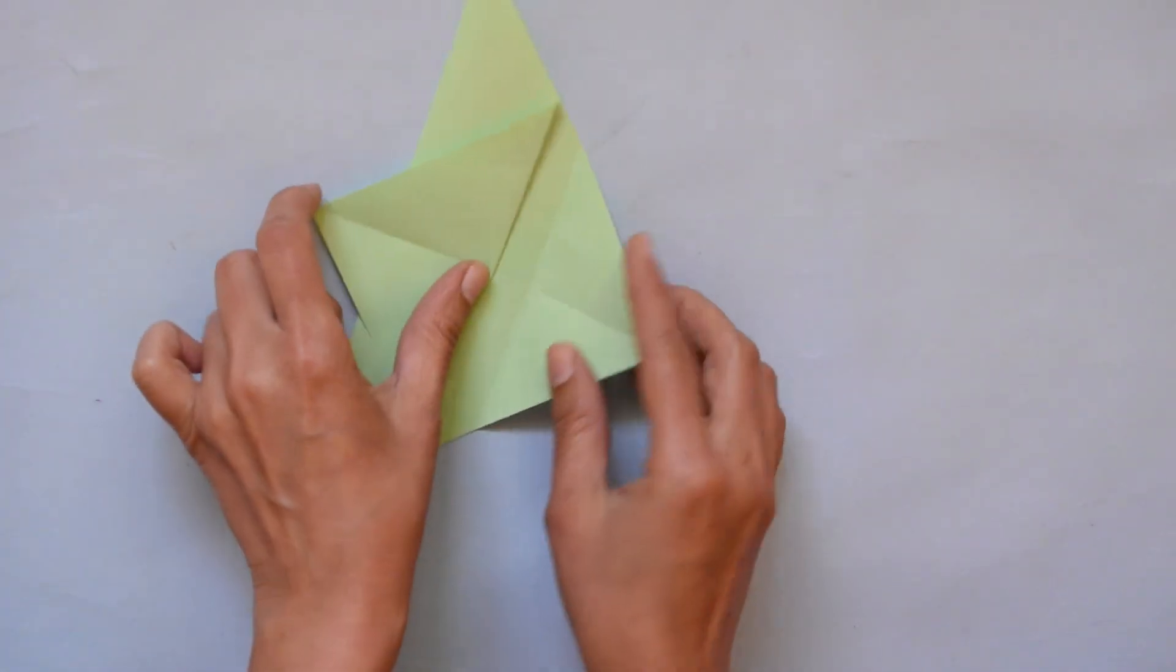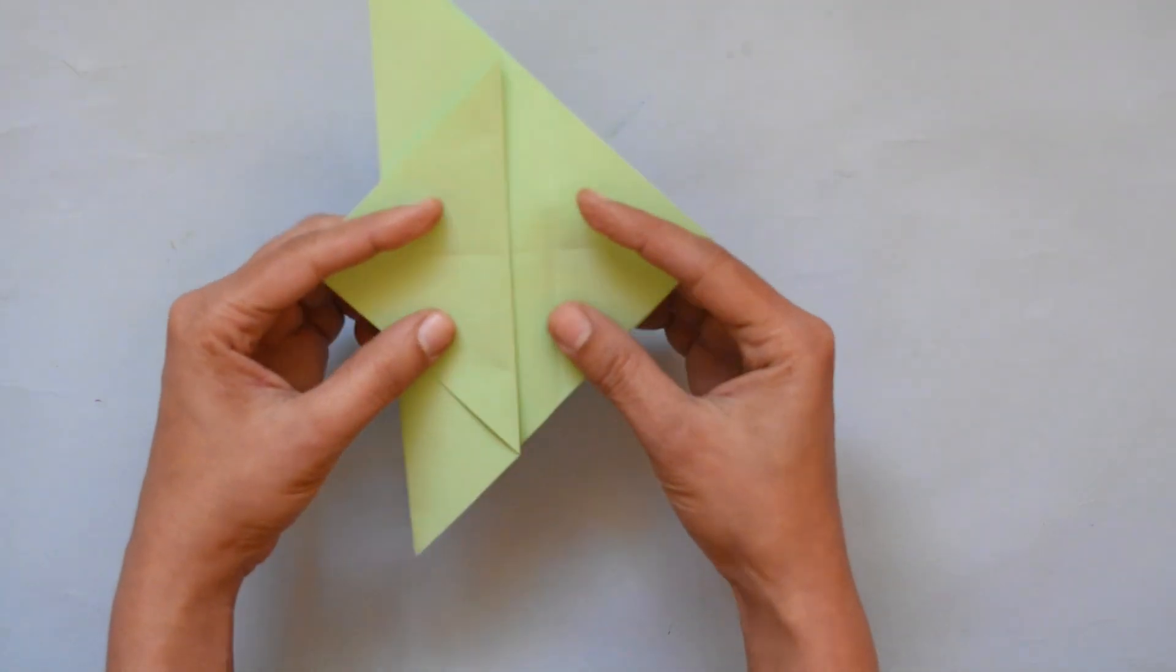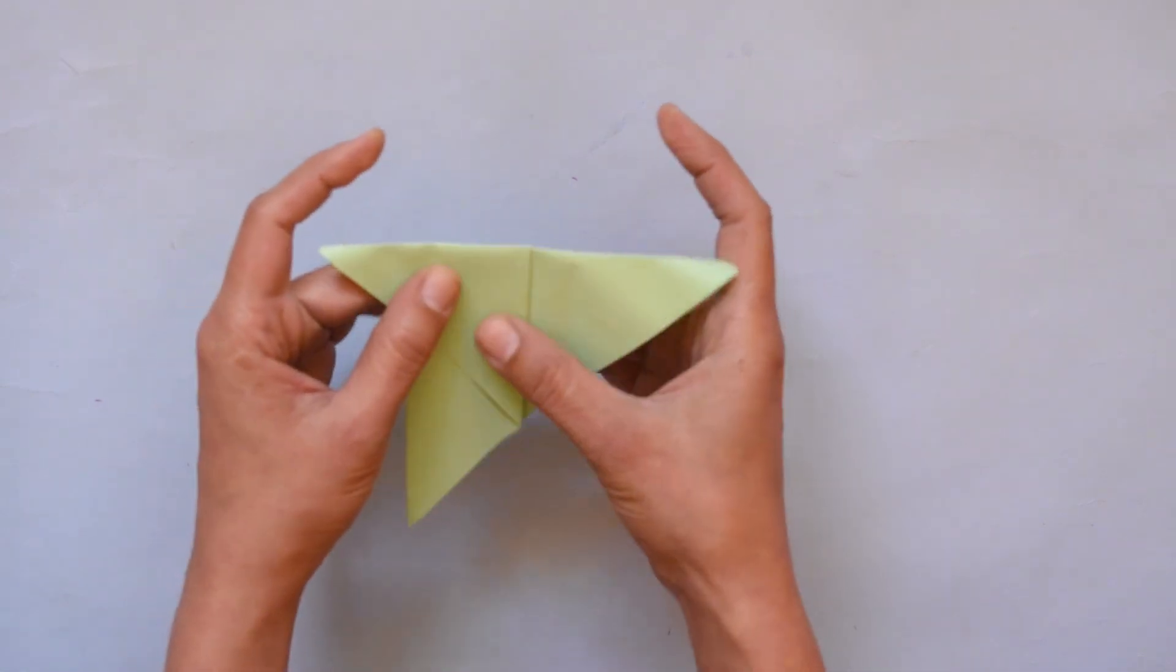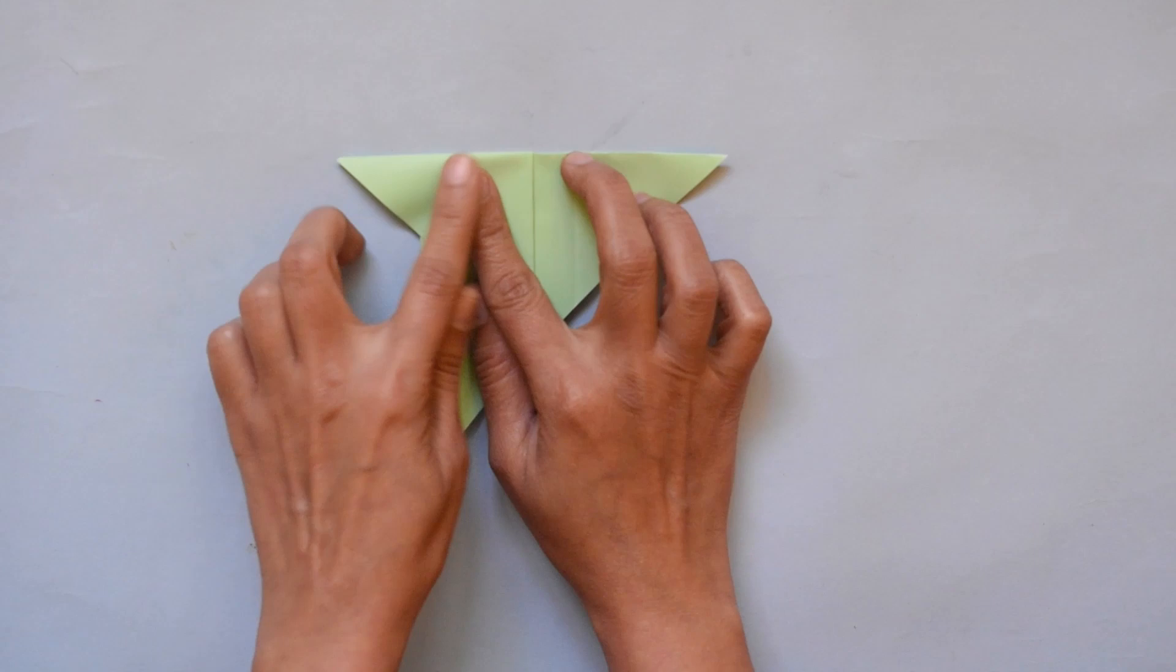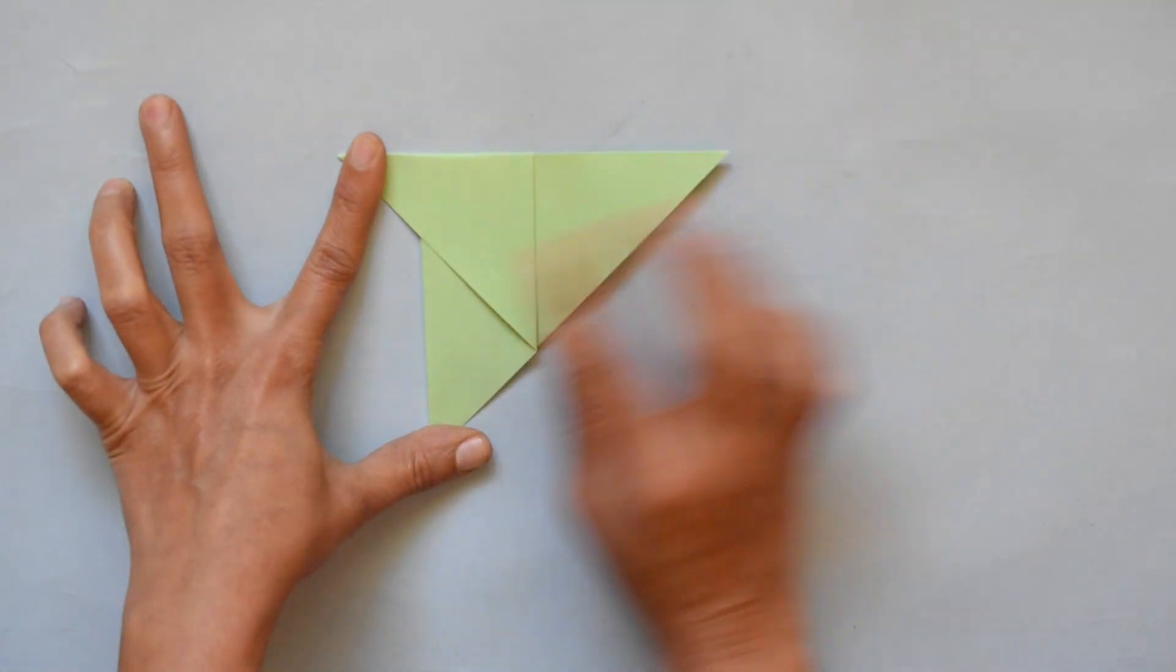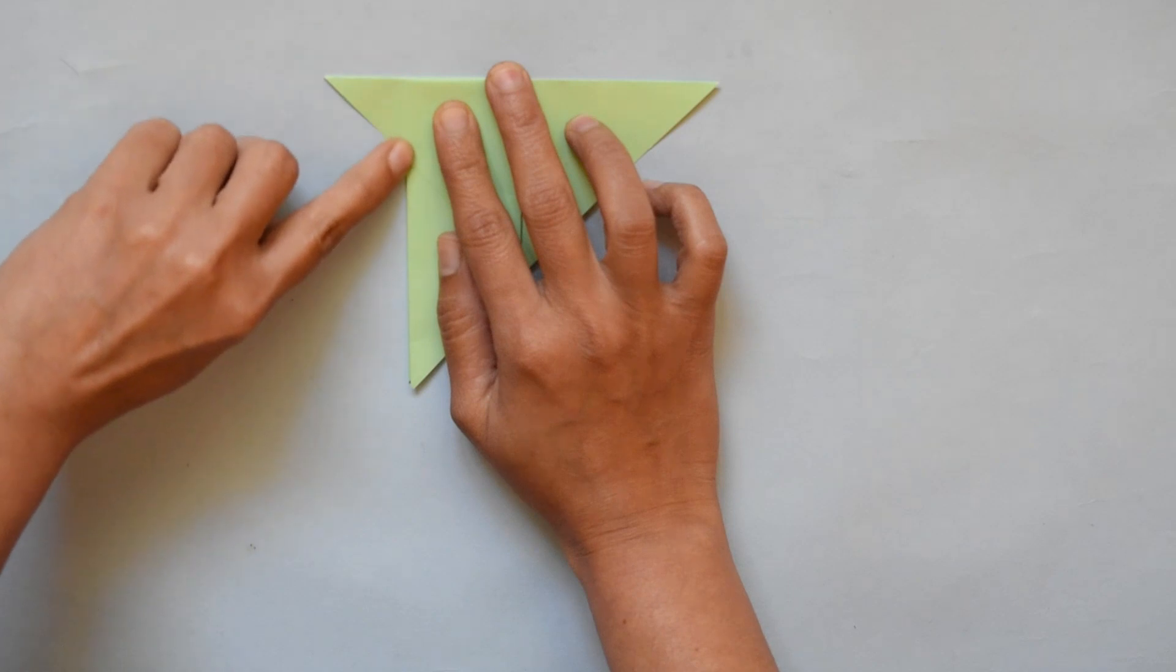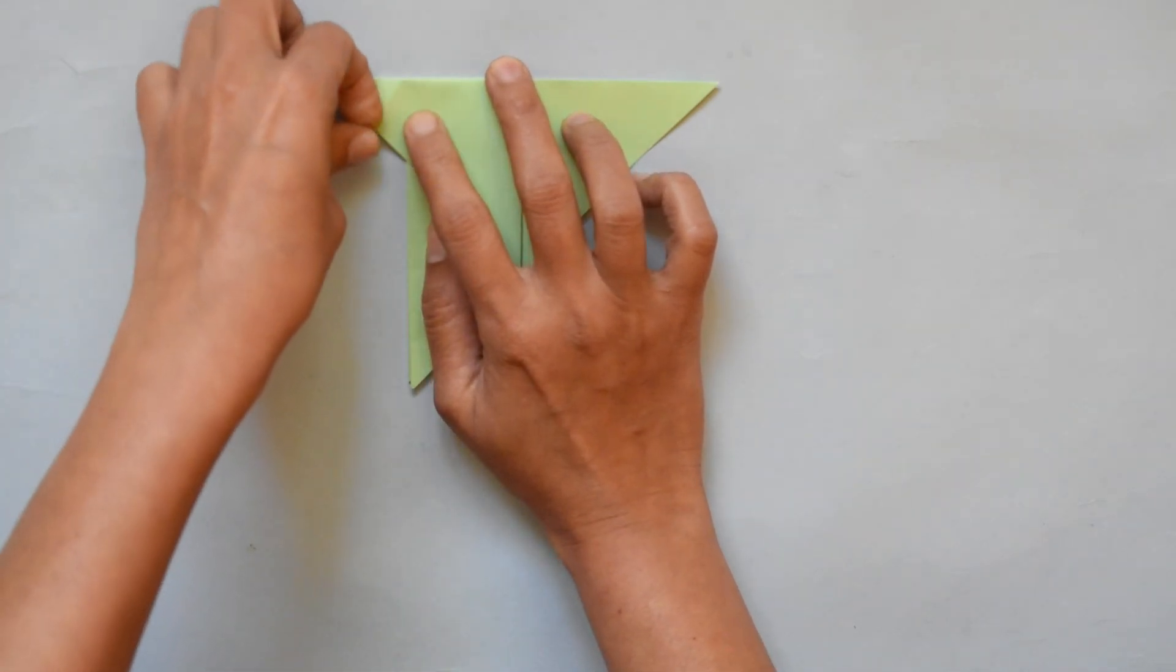Turn this paper to your left. Here we have a line. Fold the paper here like this. Now fold here a little bit in a triangular shape.